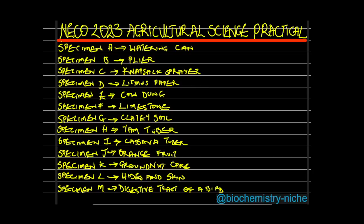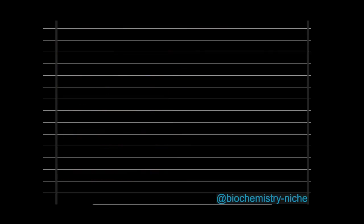These are the specimens we'll be looking at. I'll be explaining certain things about each of them — their properties, characteristic features, functions, and uses as we come across each one. So we're going straight to the first one, which is Specimen A, the watering can.